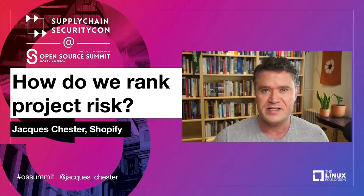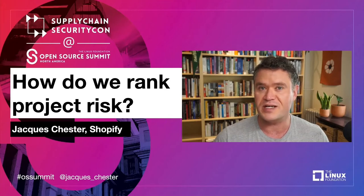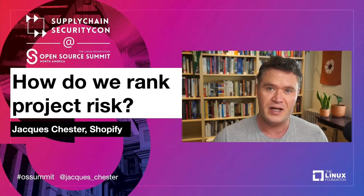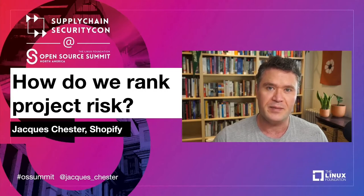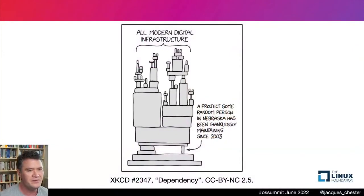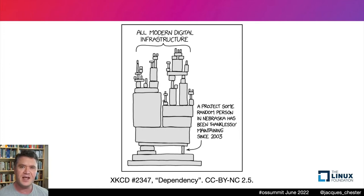I'm also going to touch lightly on a sub-problem: how to identify obscure projects with disproportionate amounts of risk. I call these 'Lib Nebraska.' If you didn't get the reference, you've probably seen the xkcd comic before in a supply chain context — in fact, you've probably seen it already at this conference. As an exercise, estimate how many times in your life you've seen this comic; hold onto that number because we'll come back to it later.